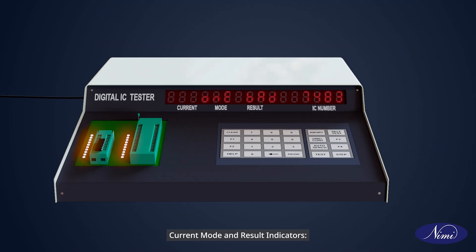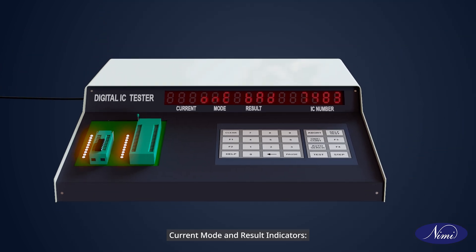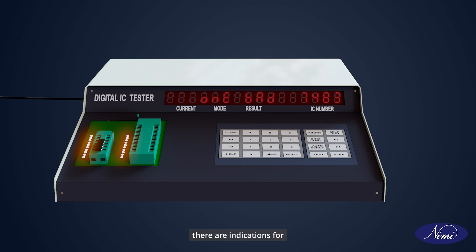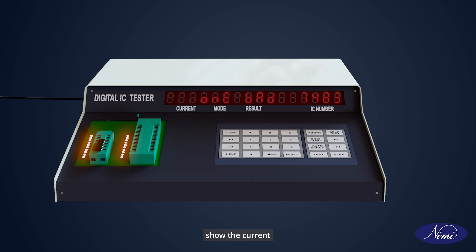Current mode and result indicators: On the display panel, there are indications for current, mode, and result, which show the current flowing through the IC, the mode of operation of the tester, and the result of IC tests respectively.